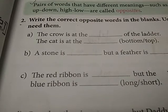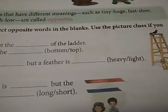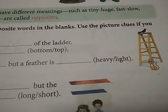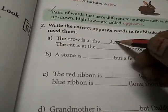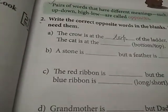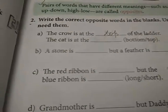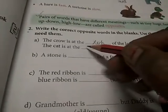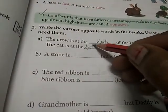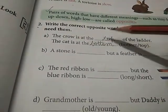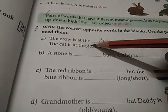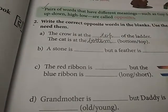The crow is at the — where is the crow? See, it is top. Top of the ladder. Next, the cat is at the — where is the cat? The cat is at the bottom. B-O-T-T-O-M. Aap saath saath spelling bhi learn karni hai. Aapko opposite words bhi learn karni hain aur inki spellings bhi learn karni hain. Clear?